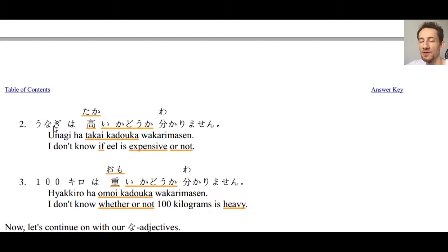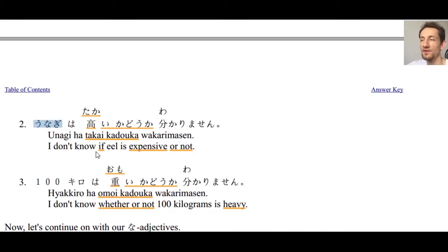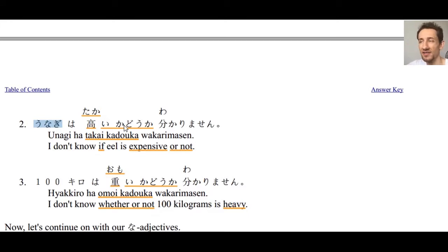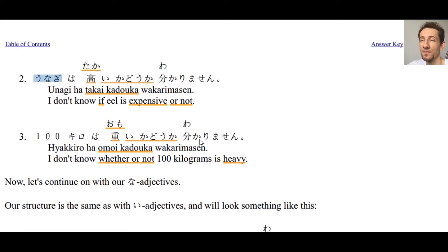Number two: うなぎは高いかどうかわかりません。うなぎ means eel, so this means 'I don't know whether or not eel is expensive.' 高いかどうかわかりません.